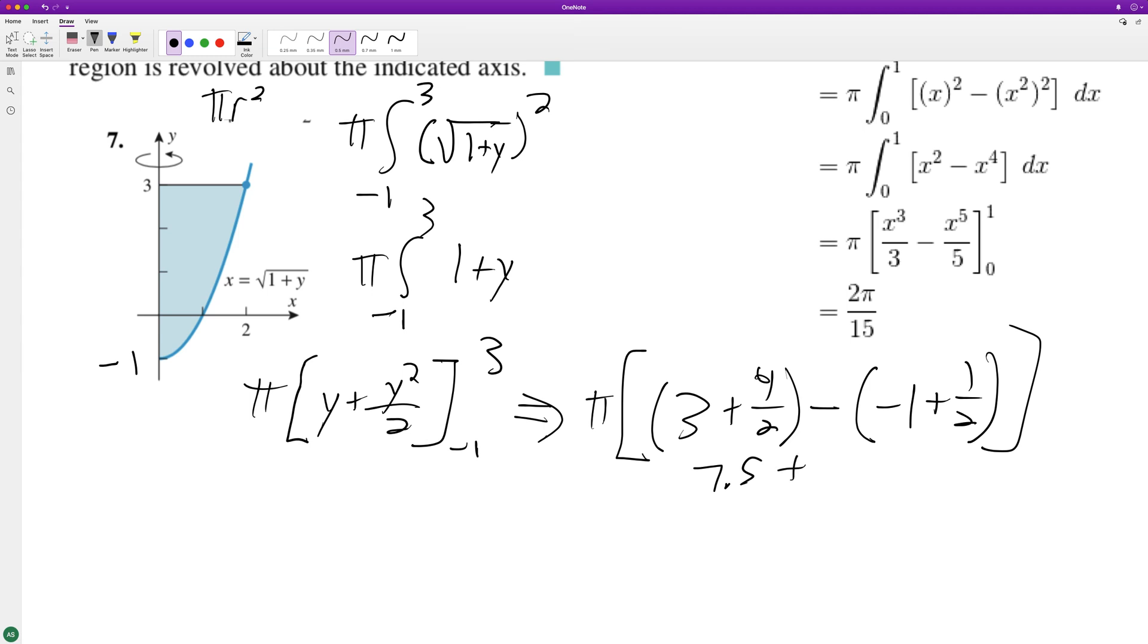So we get 8 times pi, so it's 8 pi. That's it, that's what you get when you wrap this around and get the total volume.